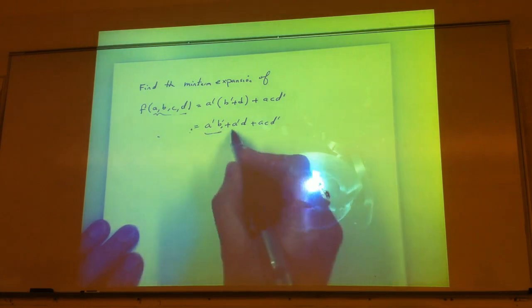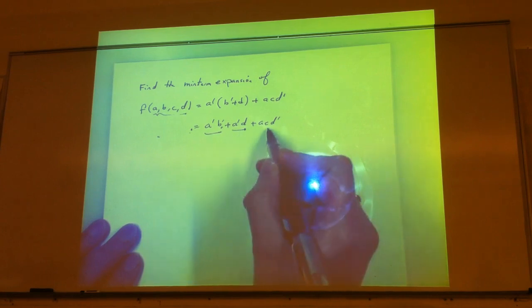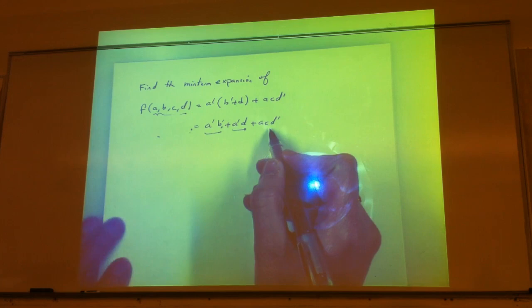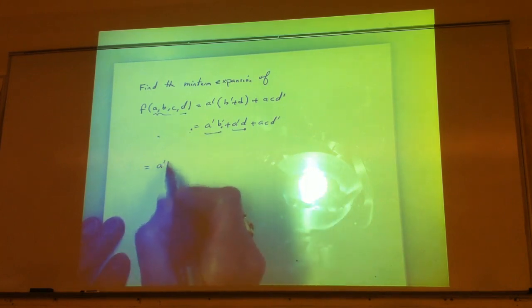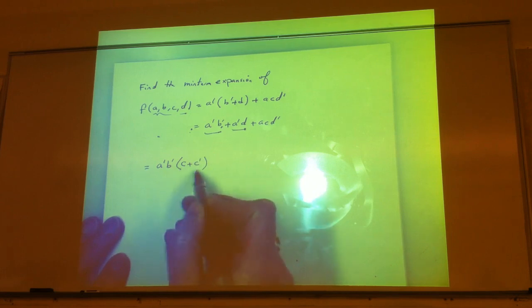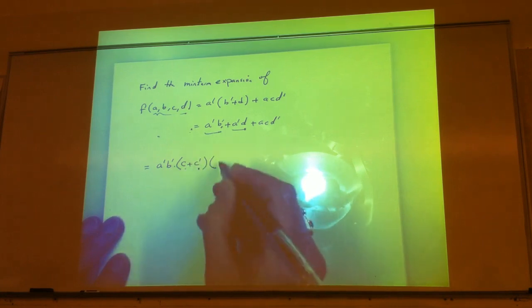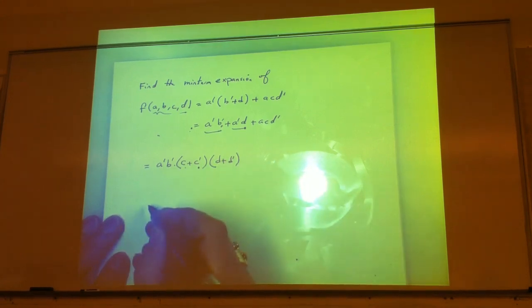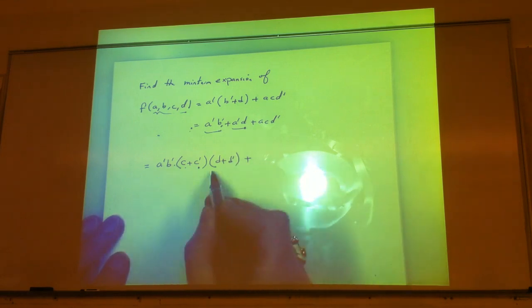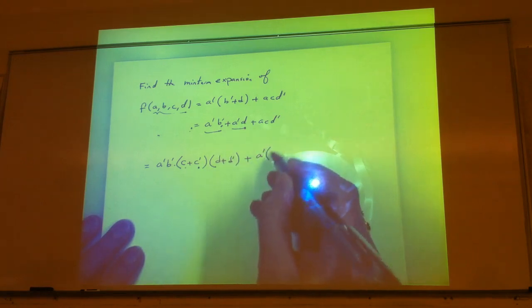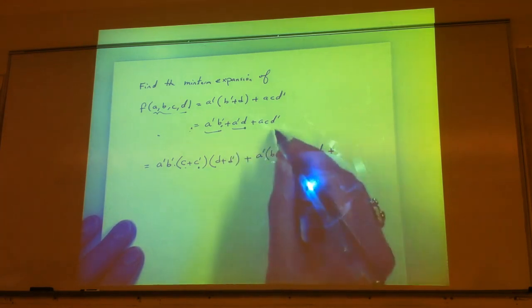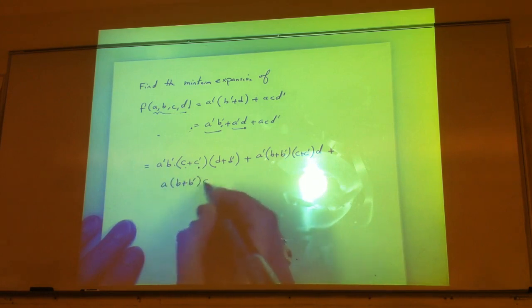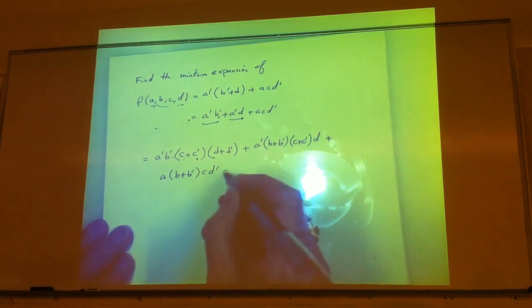C and d are missing from the first term, b is missing from the second. So we introduce missing variables: for a-prime b-prime, multiply by (c plus c-prime) and (d plus d-prime) — that's just multiplying by 1, so we haven't changed anything. Same thing for a-prime d: multiply by (b plus b-prime) and (c plus c-prime). For a c d-prime we introduce (b plus b-prime). This introduces all the variables so we'll have proper min terms.